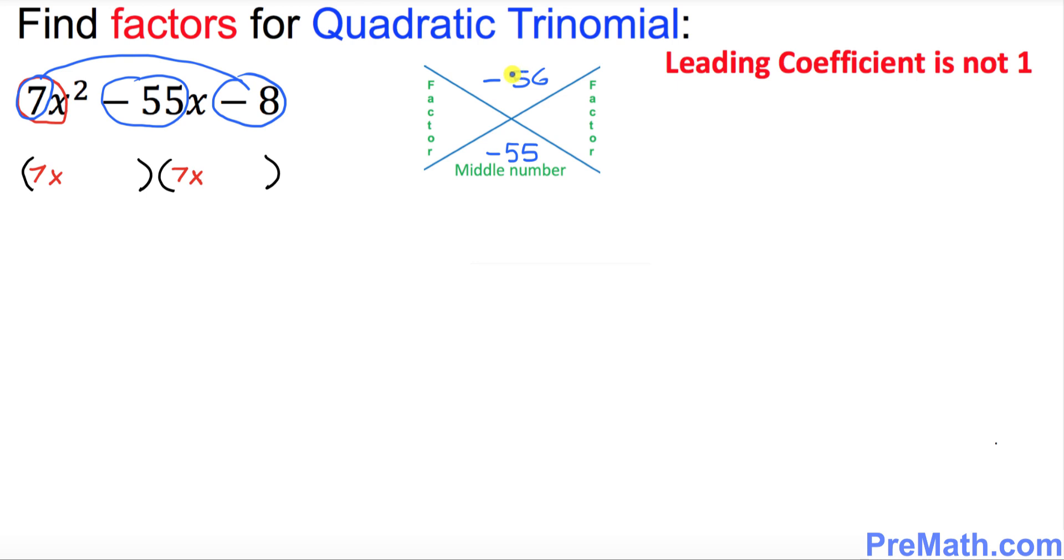Now I want you to find two factors of negative 56. If you add or subtract should give you negative 55. Think about those two numbers. So the two numbers are going to be 1 and 56, isn't it? 1 and 56 if you subtract is going to give you 55.